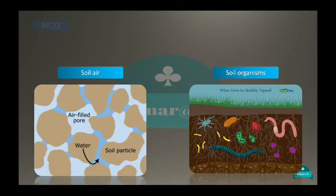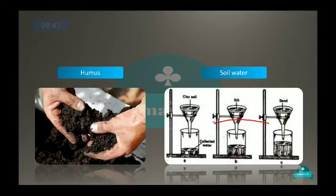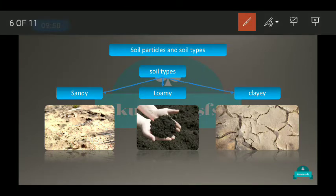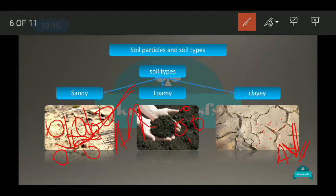The next component is soil air. Sandy soil has the most air space due to bigger particles. Clay soil has very little air. Loamy soil, being a mixture of all particle sizes, has a medium amount of air present in it.